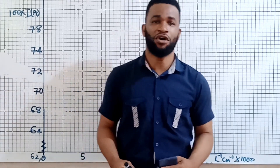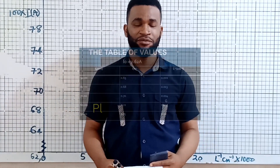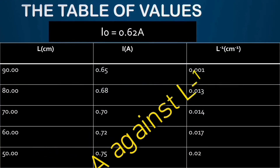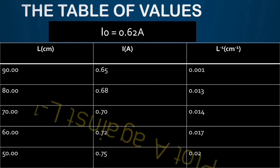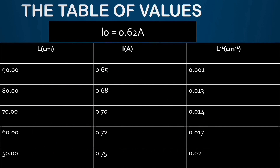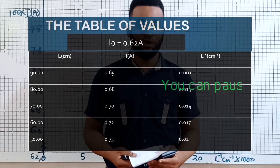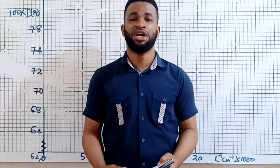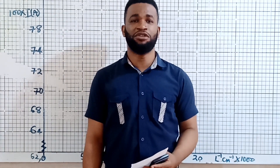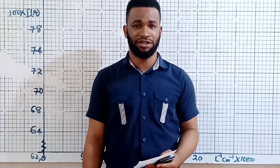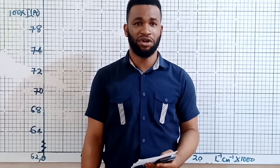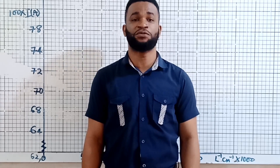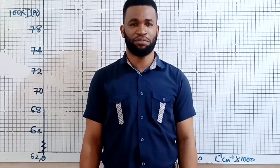You are seeing the table of values on the screen. If you look at the table, you will see the column for current which is 0.65, 0.68, 0.70, 0.72. You also look at the column for L inverse: 0.011, 0.013, 0.014. These are the values that you are plotting — current on the vertical axis and L inverse on the horizontal.